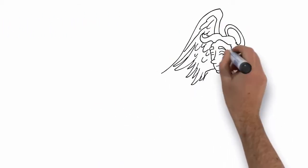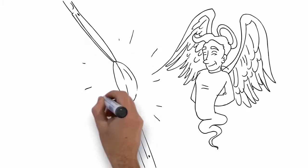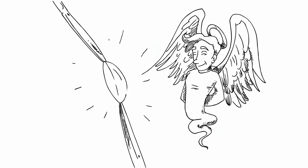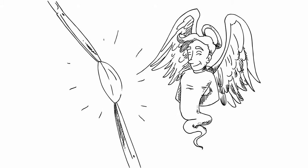In all cornea transplants, the new tissue comes from someone who is kind enough to become an organ donor. The donated cornea is rigorously tested to be certain that it's safe.